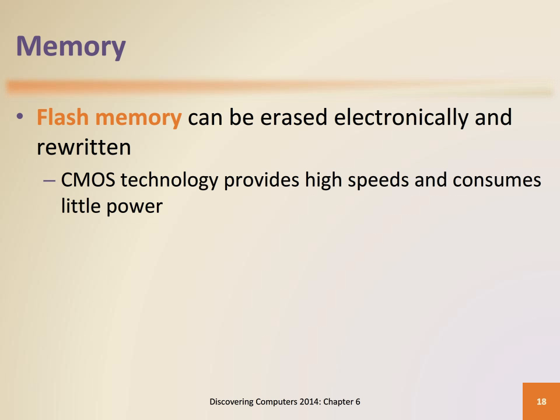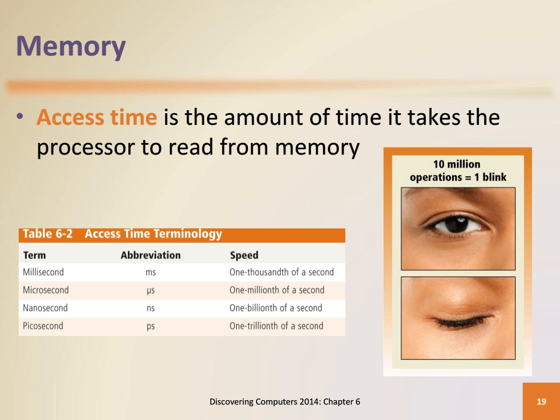Flash memory is used with smartphones, printers, digital cameras, automotive devices, audio players, and digital voice recorders. Flash memory is a type of non-volatile memory that can be erased electronically and rewritten. Flash memory chips consist entirely of electronic components and contain no moving parts.